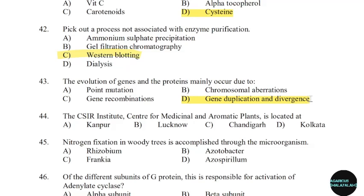44th question: The CSIR institute Centre for Medicinal and Aromatic Plants is located at. Correct answer: Option B — Lucknow.